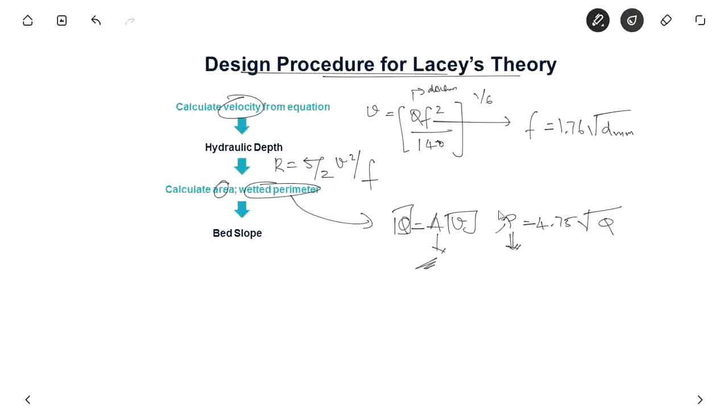So based on area and based on wetted perimeter, you can assume side slopes, like 1 is to 2 or something and find the breadth and depth of the canal. So now the only thing left to find out is bed slope. For bed slope, he has given a formula S equal to f power 5 by 3 divided by 3340 q to the power 1 by 6. So f you know is the silt factor and q is the discharge. From this you can calculate the bed slope.